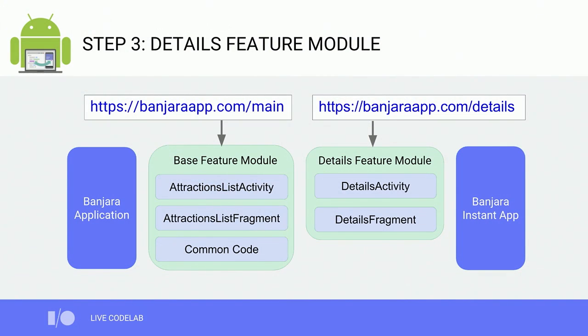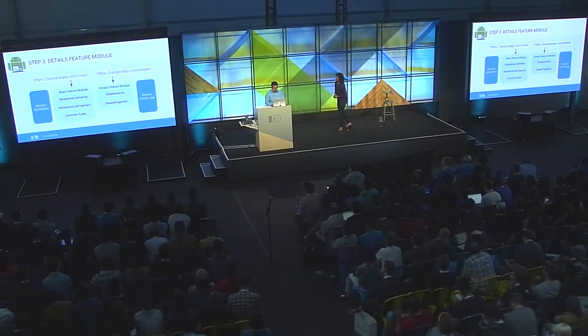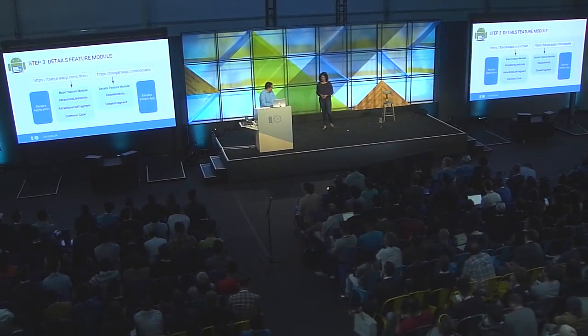Now let's move on to step three. We're going to extract out the details experience into its own feature module by introducing a new feature module and refactoring code out of the existing base module. We'll then update the application module and the Instant App module to build from two feature modules.